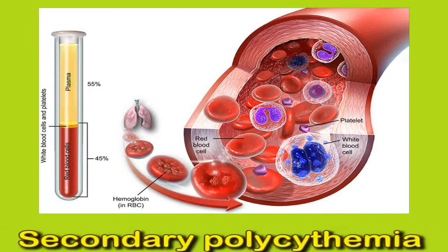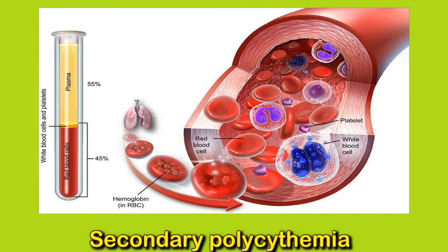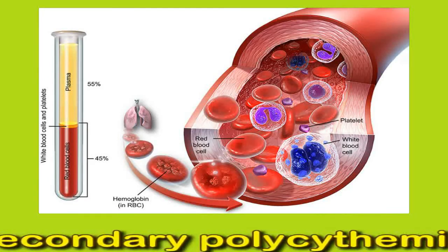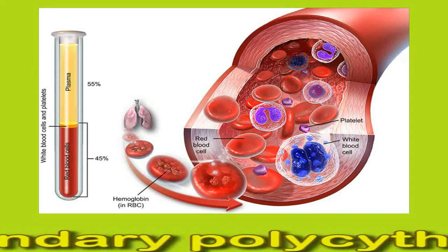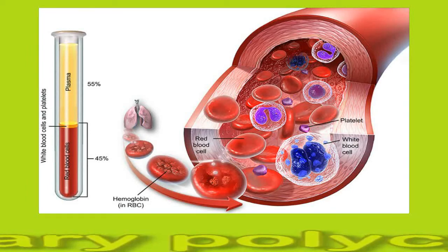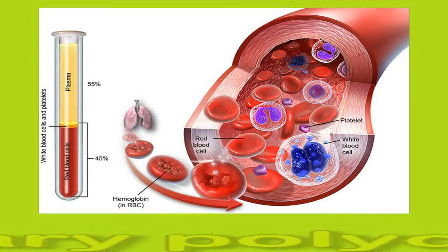Secondary polycythemia is the body's response to chronic hypoxia due to COPD. The body starts creating extra red blood cells to transport more oxygen. Extra blood cells mean that the blood is more prone to clotting. In people with COPD, this condition can also increase the risk of abnormal heart rhythms, longer hospital stays, and more breathing complications.